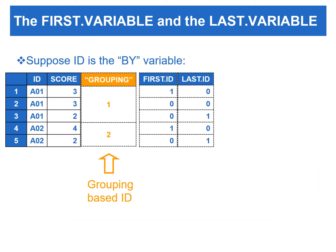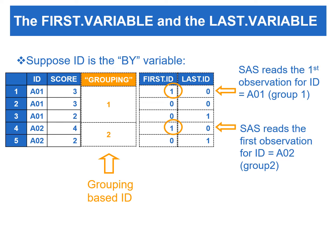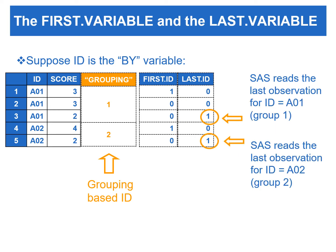For example, this data set consists of five observations containing the values of score for two subjects, A01 and A02. Suppose that the ID variable is the by-variable — then there will be two by-groups because there are two distinct values for the ID variable. First.id is set to one in the PDV when SAS reads the first observation in each by-group, and is set to zero when reading the second to the last observation in each by-group. Similarly, last.id is set to one when reading the last observation in each by-group, and set to zero when reading those observations that are not last.